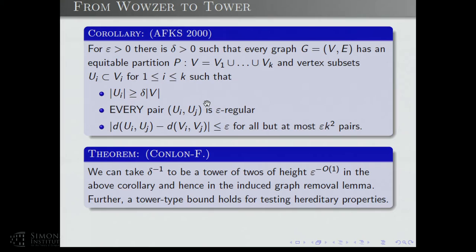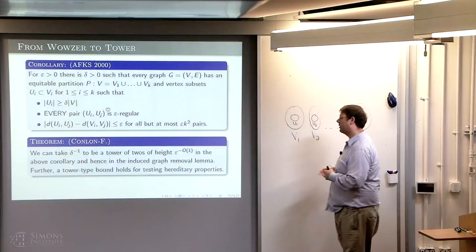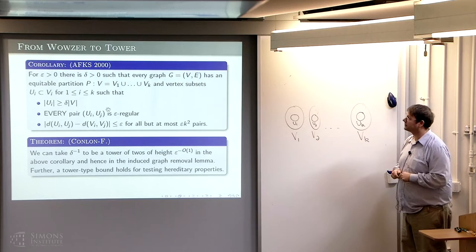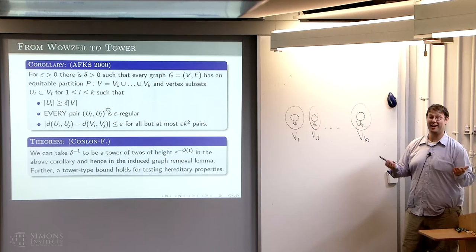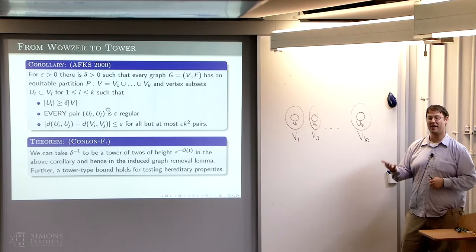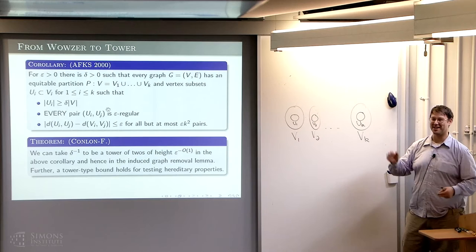This brings the Wowser-type bounds down to tower-type bounds — still completely useless practically. You say these are constant-time algorithms, but when your constant depends on a tower function of a constant, it's not actually useful. Theoretically these are quite interesting, and it's totally unclear whether these bounds can be dramatically improved in the removal lemmas. For epsilon like one-third you might have an ad hoc argument, but for epsilon like one-tenth, enormous constants appear.